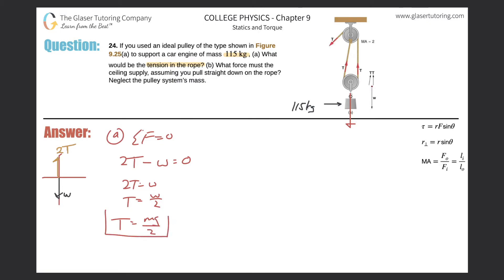T is then equal to mg over 2. This is the general formula. Now I can generalize this even more, where I can substitute out this 2 and plug in a variable for that, and I could write something like this: T is equal to mg over the mechanical advantage.